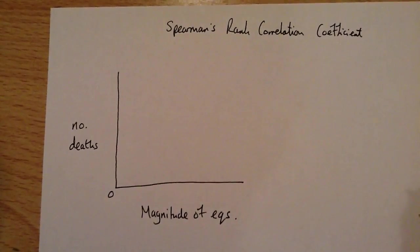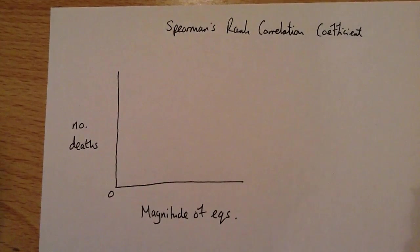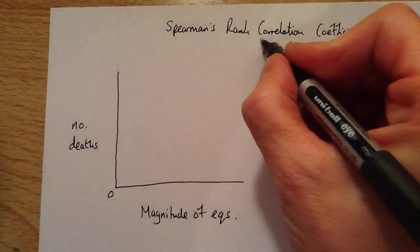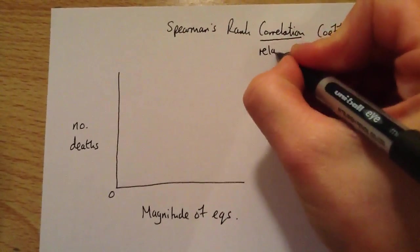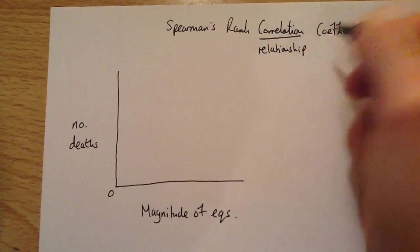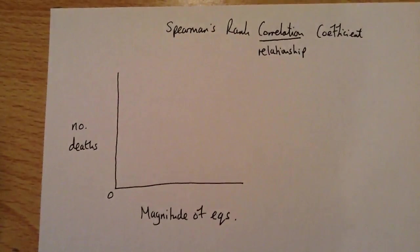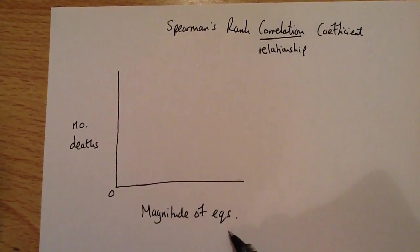Welcome to this tutorial on using Spearman's rank correlation coefficient, a statistical test that we sometimes use in geography. It's a test which measures the correlation or relationship between two variables. The two variables I'm going to use today are magnitude of earthquakes and number of deaths from earthquakes.